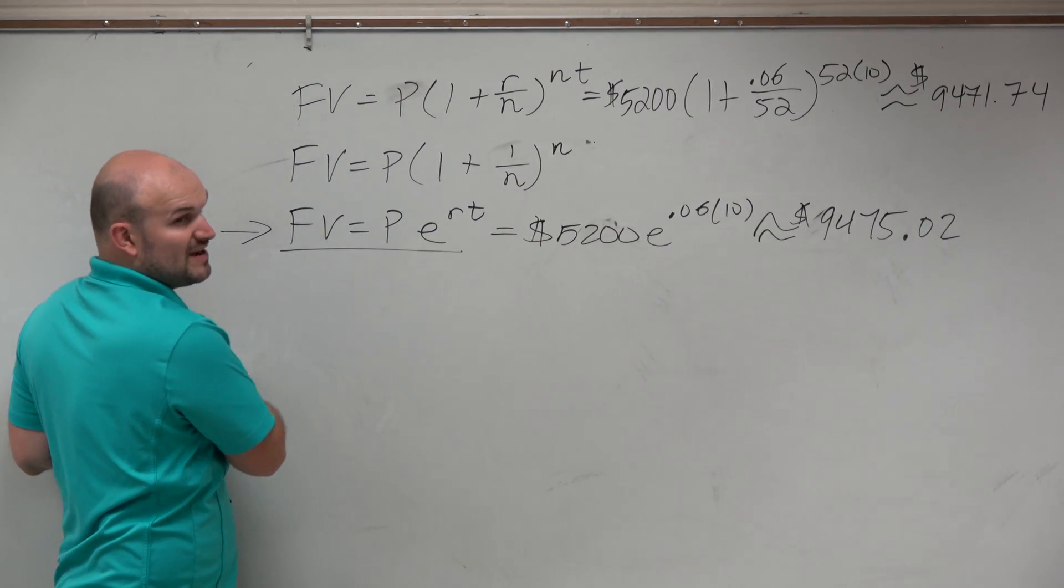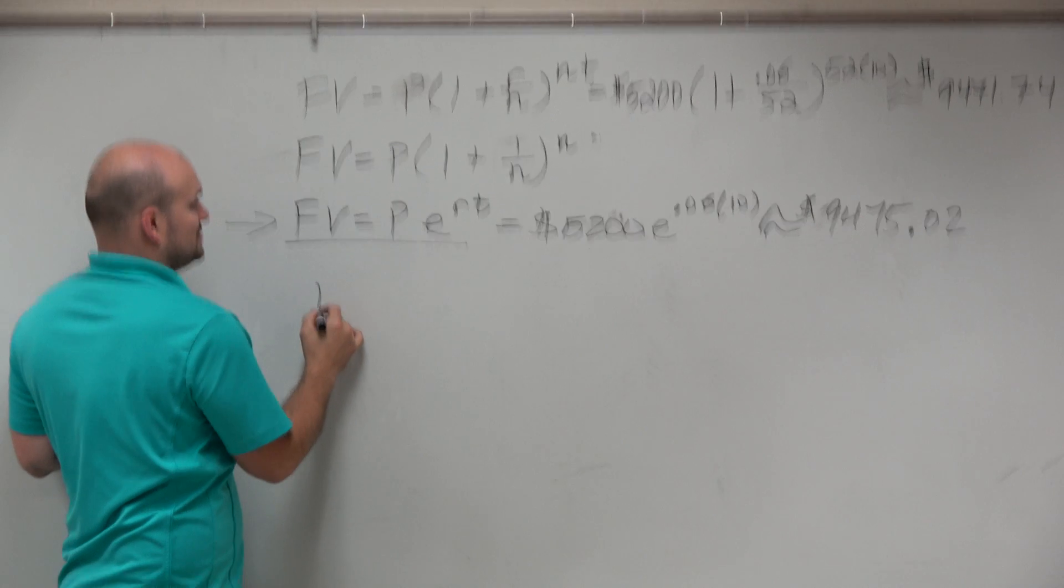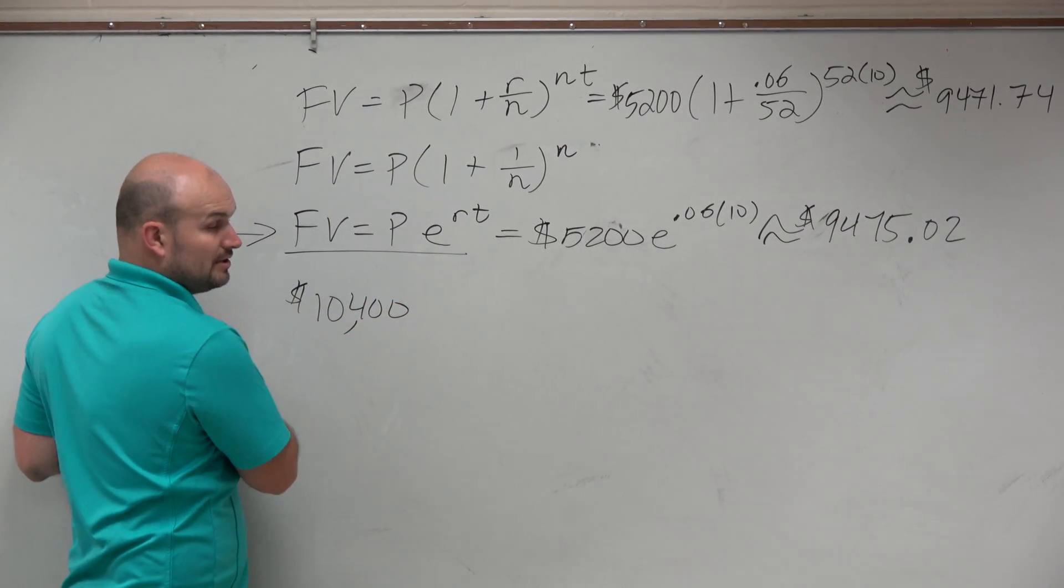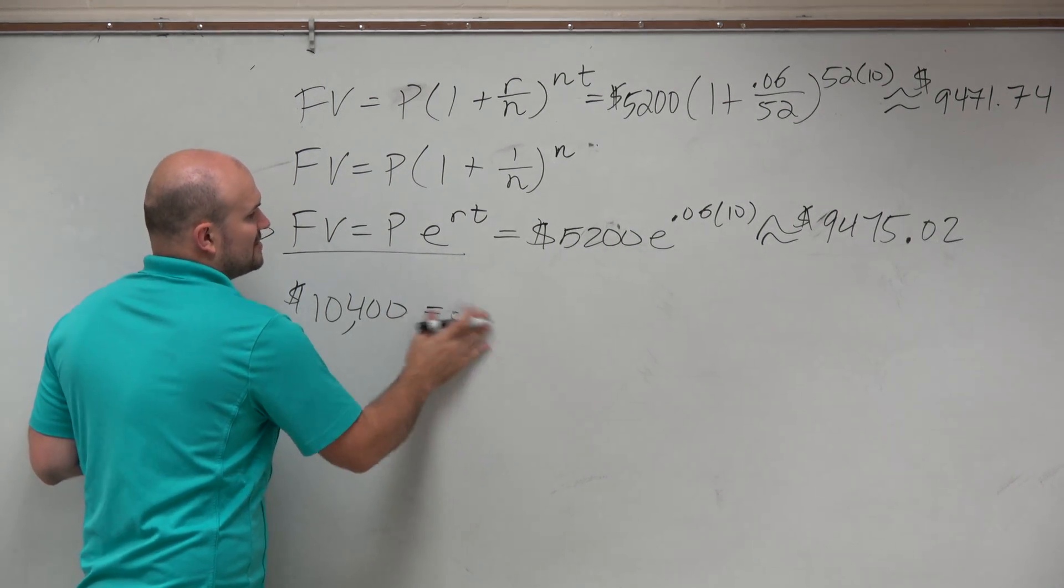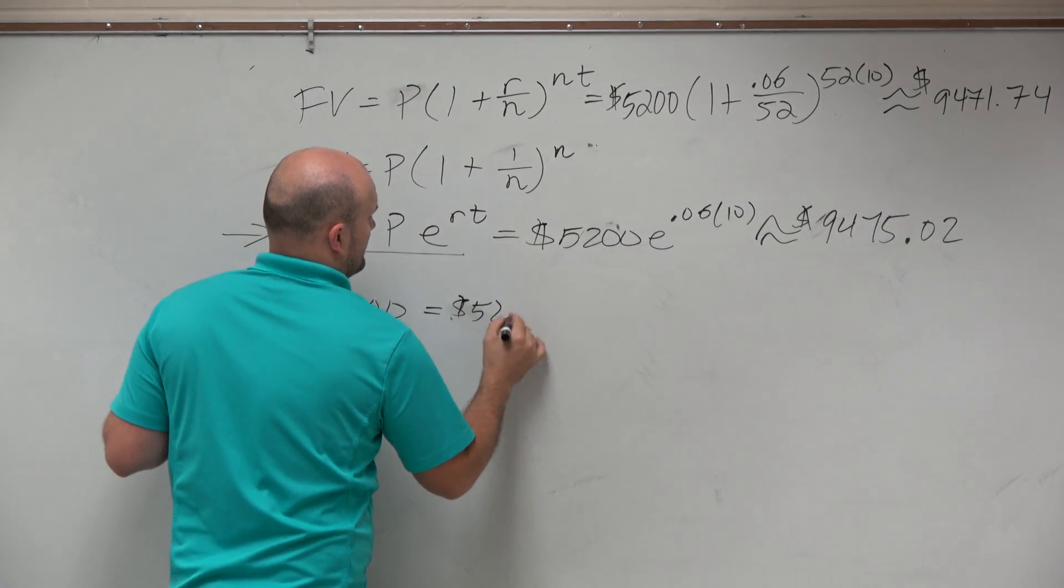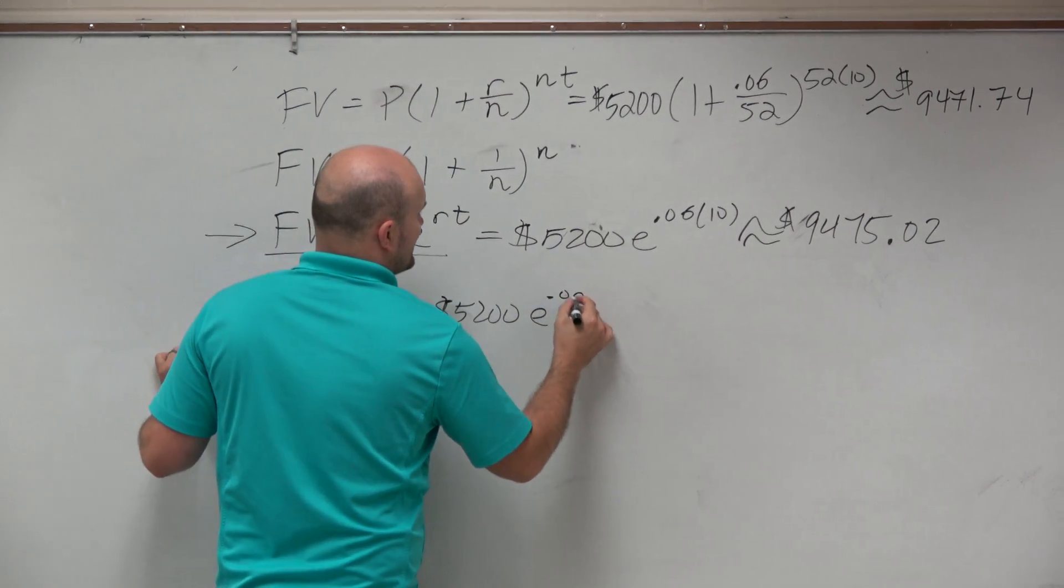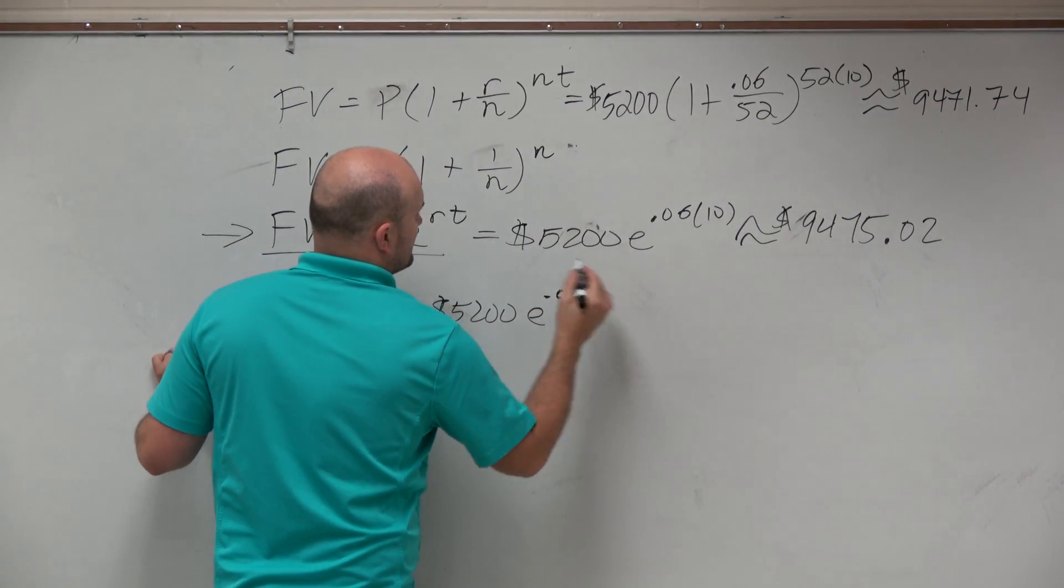So if your initial investment is $5,200, that means your end result is going to be $10,400. Everybody follows? $10,400 equals $5,200 times e to the 0.06 times t.